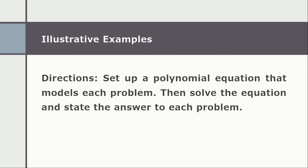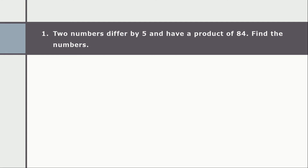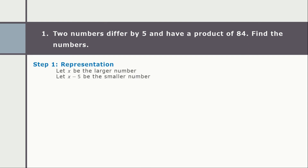Let's solve word problems involving polynomials and polynomial equations. We need to set up a polynomial equation that models each problem, solve the equation, and state the answer. Problem number one: two numbers differ by five and have a product of 84. Find the numbers. We are looking for two numbers that when multiplied together give a product of 84. Let x be the larger number and let x minus 5 be the smaller number.